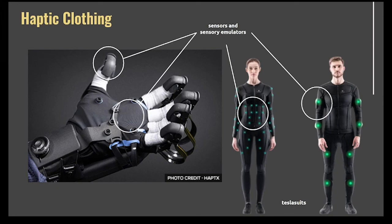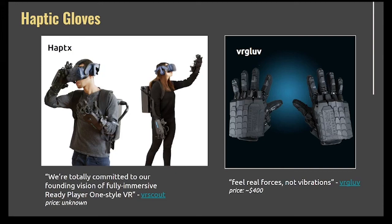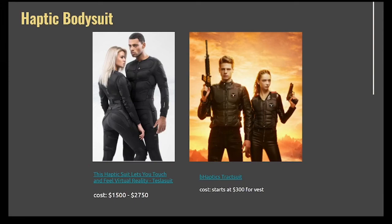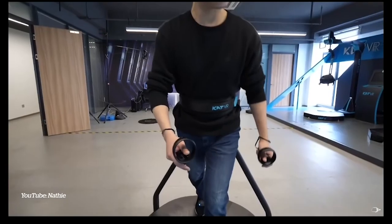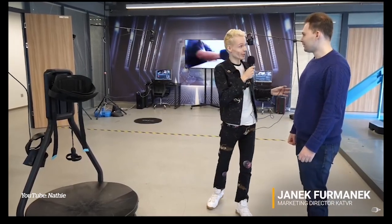You can see where the sensors are placed in these devices. To quote Haptex: 'We're totally committed to our founding vision of fully immersive Ready Player One style VR.' Haptic bodysuits exist now — you can get a full bodysuit or for a cheaper price, just the vest. The omnidirectional treadmill in Ready Player One shows Parcival standing on one in his van, physically moving forward, backward, and side to side. We already have omnidirectional tracks available — it honestly looks like something straight out of Ready Player One.